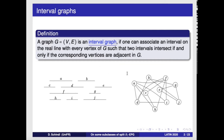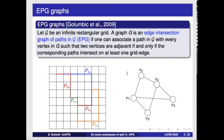A generalization we are interested in is the class of EPG graphs, defined by Golombic in 2009. It's the same idea, but instead of intervals you have paths on a grid. Two paths on a grid are said to be intersecting if they share a grid edge, and they are not intersecting if they only share a grid point. For instance, V4 and V5 are adjacent because their corresponding paths share an edge.